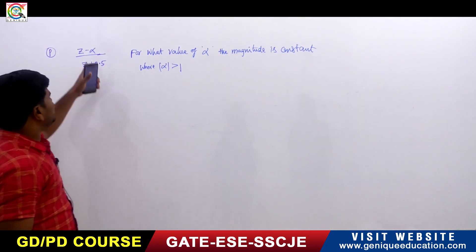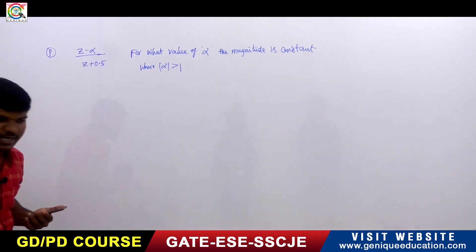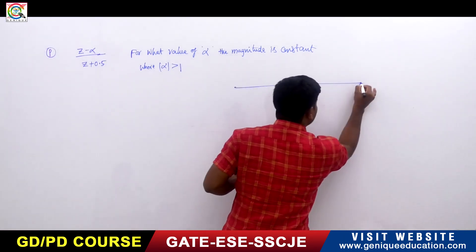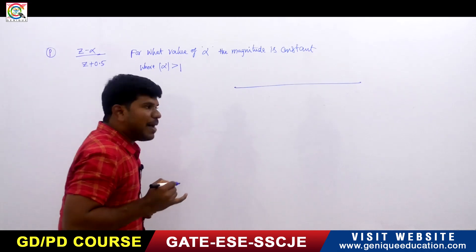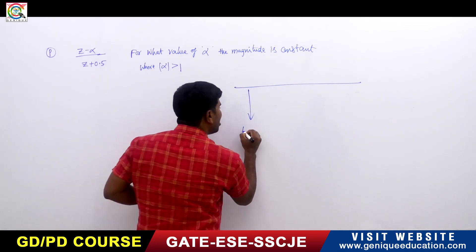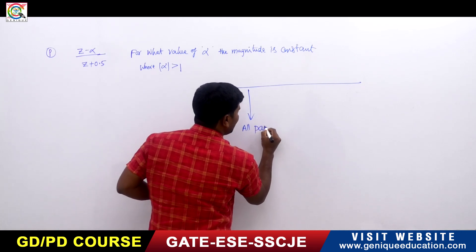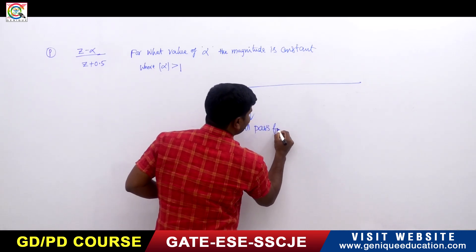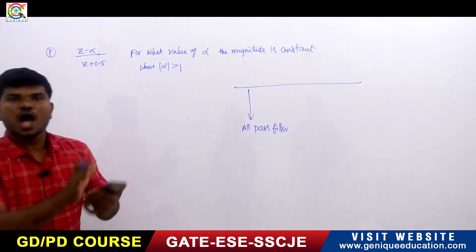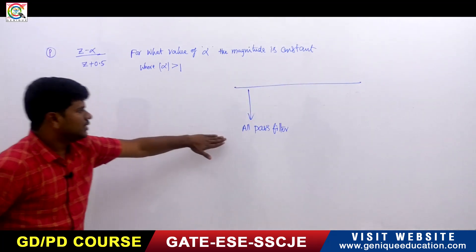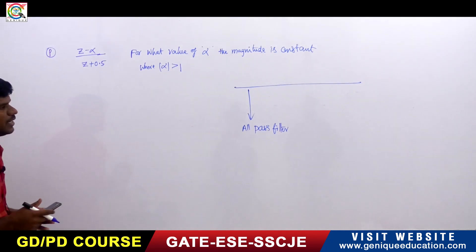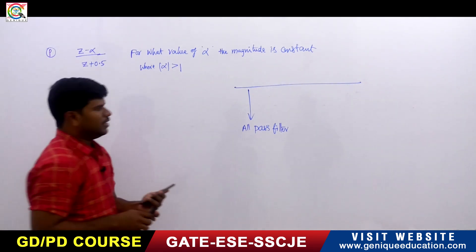The magnitude being constant means this is an all-pass filter. The magnitude is constant for all values of frequency, and that is what defines an all-pass filter.